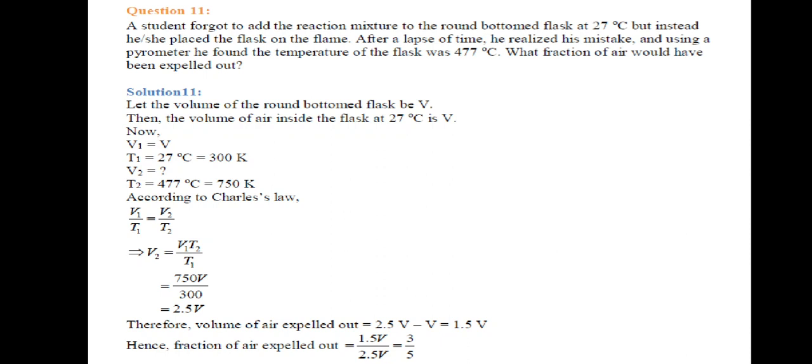Let the volume of air inside the flask at 27 degrees centigrade equal V. Temperature T1 is 27 degrees centigrade which is 300 Kelvin, T2 is 477 which is 750 Kelvin, V1 equals V. According to Charles law, V1/T1 equals V2/T2. V2 equals V1 times T2/T1 which is 750 times V upon 300 which is 2.5 times V. Therefore the air expelled is 2.5V minus V which is 1.5V.